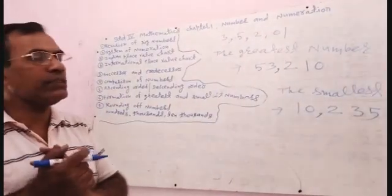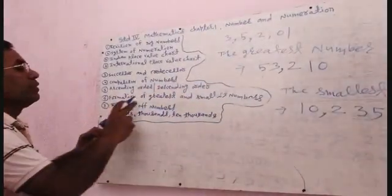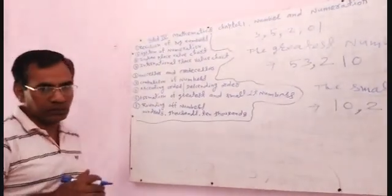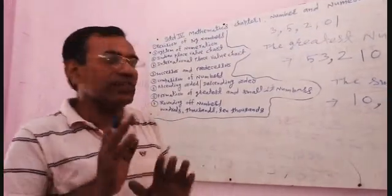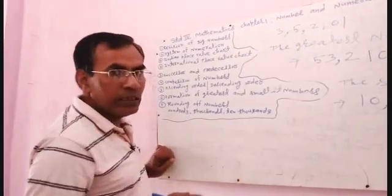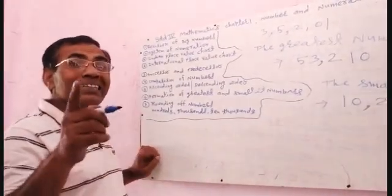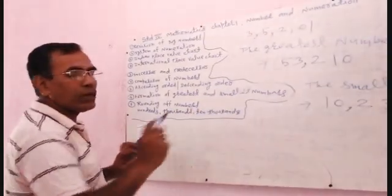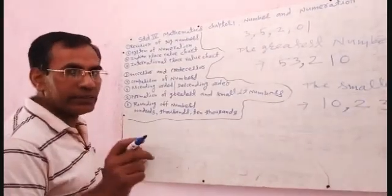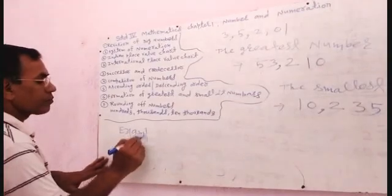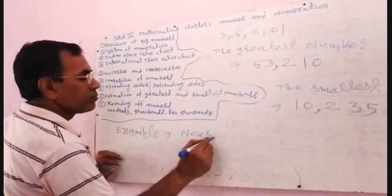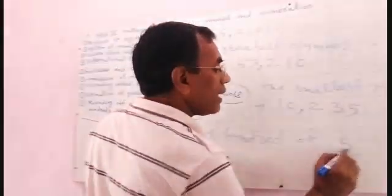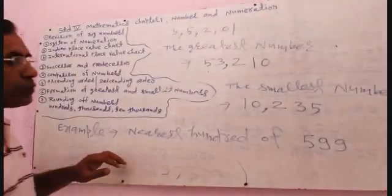Now I am teaching you about rounding of numbers. Rounding of numbers means you have to write the nearest number — to hundreds, thousands, or ten-thousands. If you want to write nearest hundreds, you have to look at the tens digit. For example, the nearest hundred of 599: look at the tens digit.